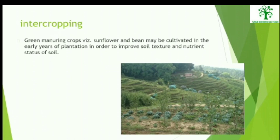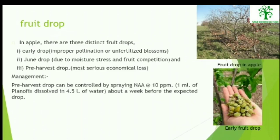Intercropping: Green manuring crops like sunflower and bean may be cultivated in the early years of plantation to improve the soil texture and nutrient status of the soil. Fruit Drop: In apple, there are three distinct fruit drops — the early drop, the June drop, and the pre-harvest drop.